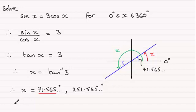If we give these answers now to three significant figures, then the first one here is going to be 71.6 degrees. And this one here will be 252 degrees. And both of these are given to three significant figures, 3SF.